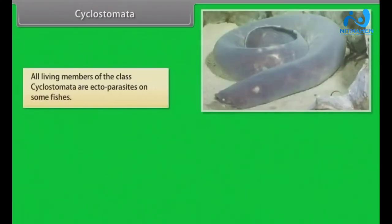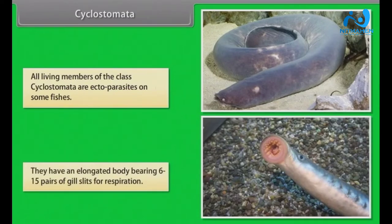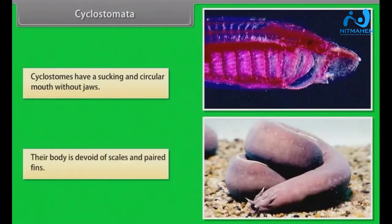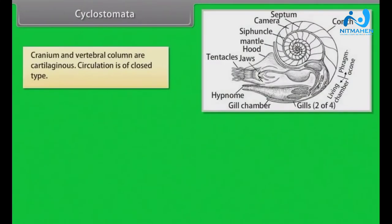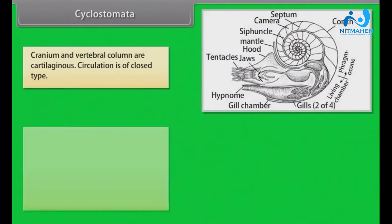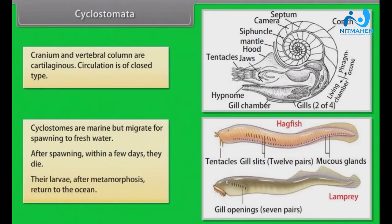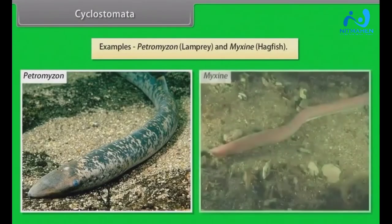All living members of the class Cyclostomata are ectoparasites on some fishes. They have an elongated body bearing six to fifteen pairs of gill slits for respiration. Cyclostomes have a sucking and circular mouth without jaws. Their body is devoid of scales and paired fins. Cranium and vertebral column are cartilaginous. Circulation is of closed type. Cyclostomes are marine but migrate for spawning to fresh water. After spawning, within a few days they die. Their larvae after metamorphosis return to the ocean. Examples: Petromyzon (Lamprey) and Myxine (Hagfish).